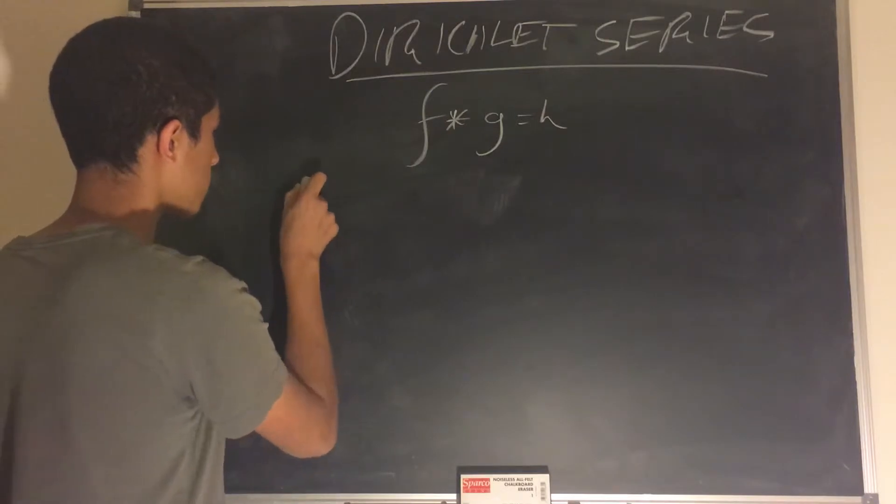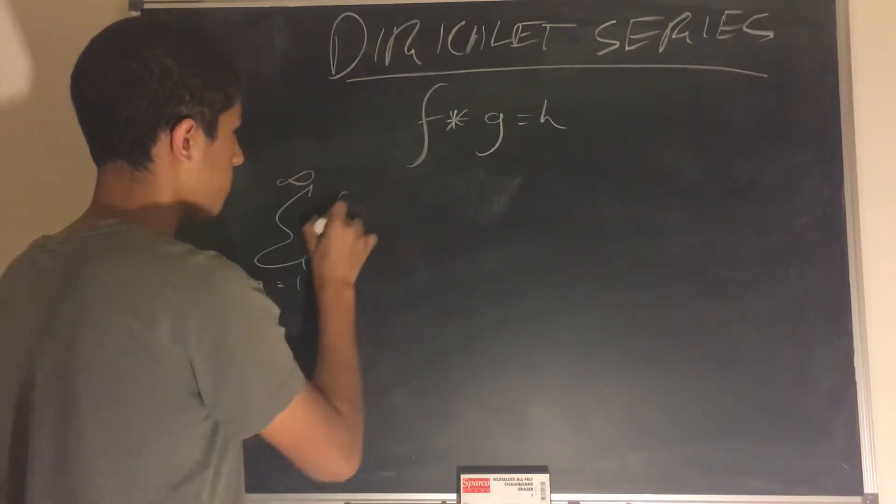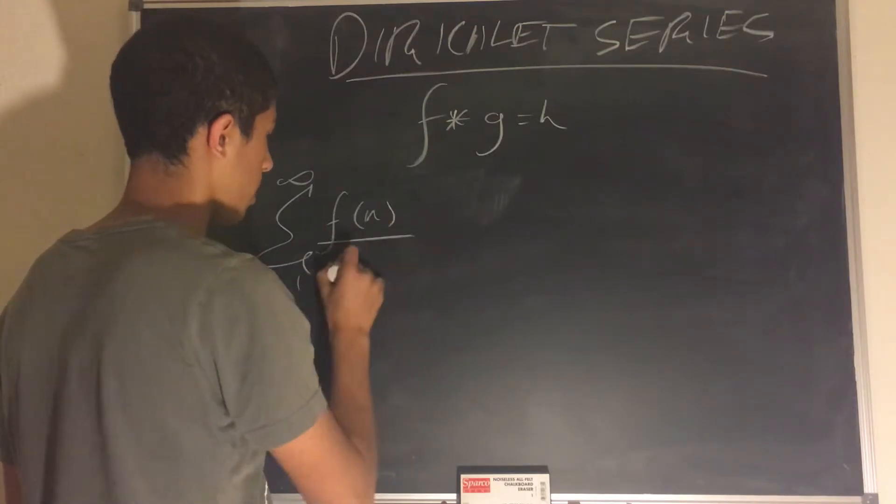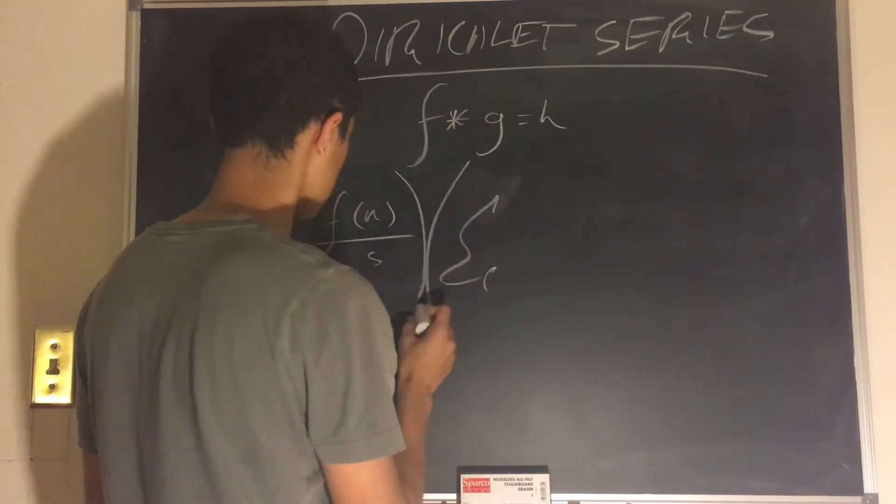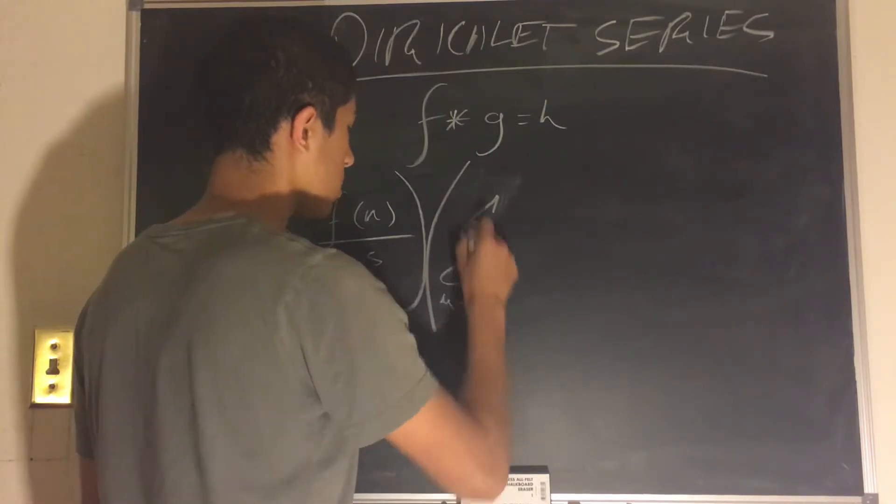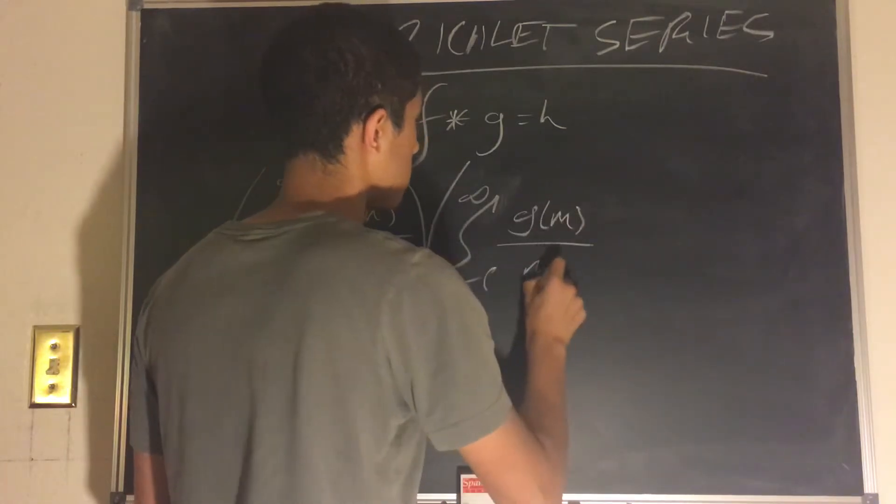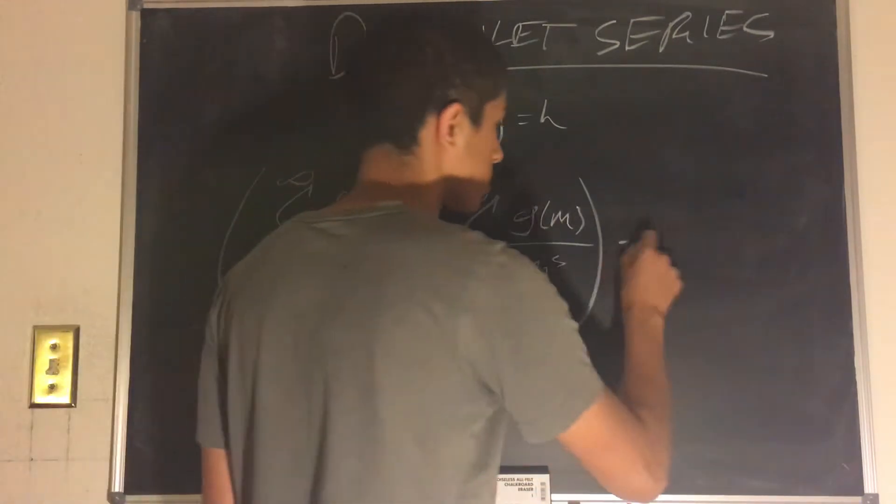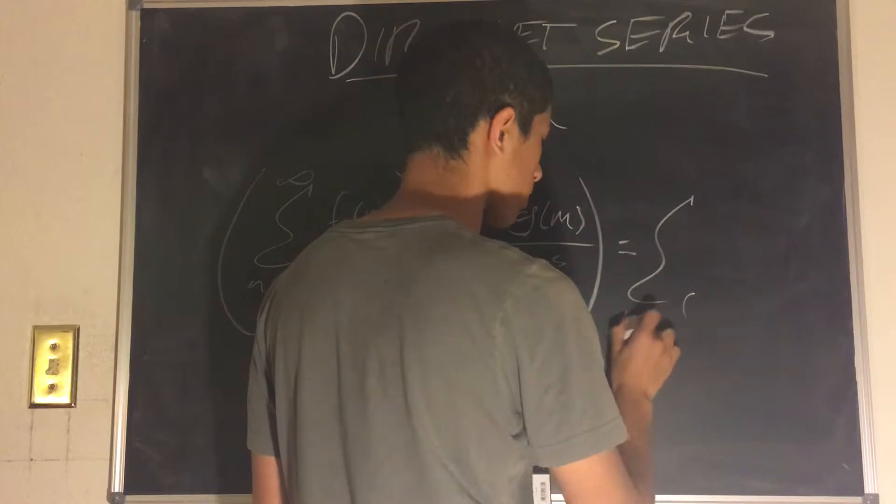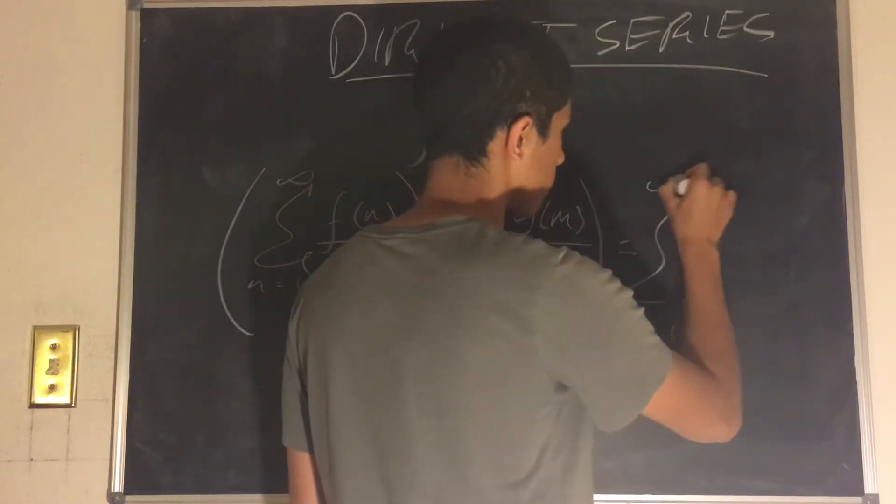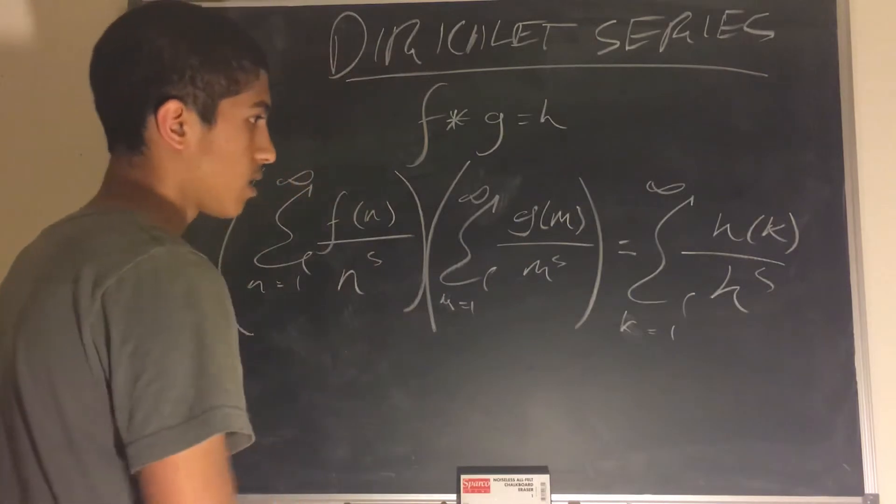So let's take the Dirichlet series of f, n equals 1 to infinity, f of n over n to the power of s. And let's multiply this with the Dirichlet series for g. So sigma m equals 1 to infinity of g of m divided by m to the power of s. And we will be proving that this is equal to the Dirichlet series for h, which is sigma k equals 1 to infinity of h of k over k to the power of s. So we will be proving this.